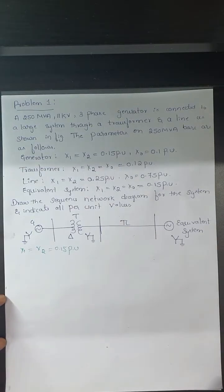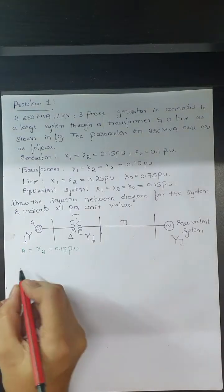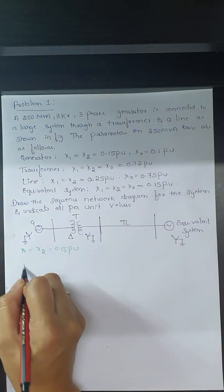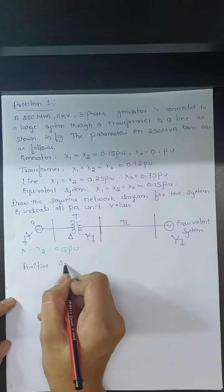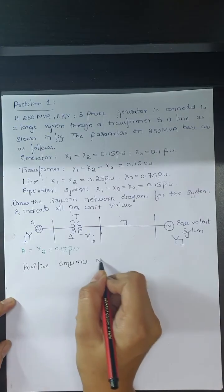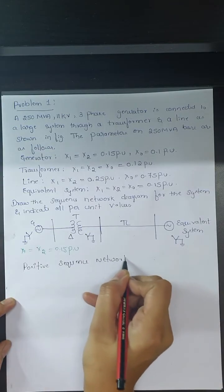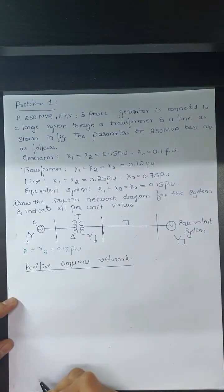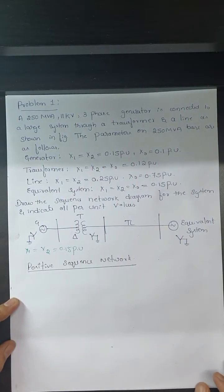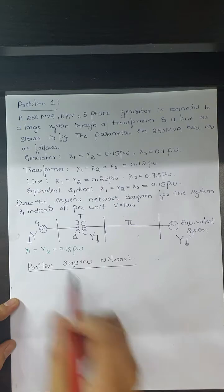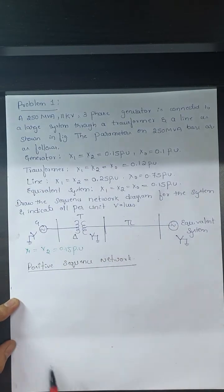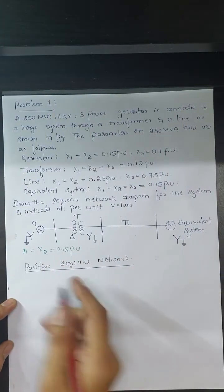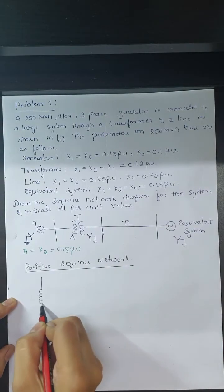Now, for the positive sequence network: the generator is connected to the transformer, next comes the transmission line, then we have the equivalent system. We represent the positive sequence network in the same order — the generator is represented first, connected to the transformer, then the transmission line, then the equivalent system.